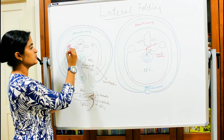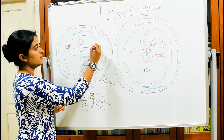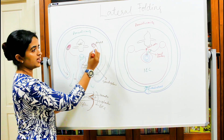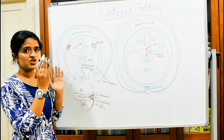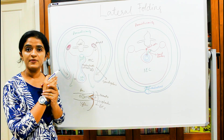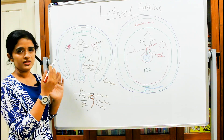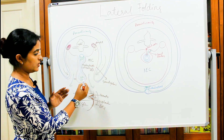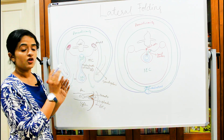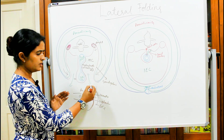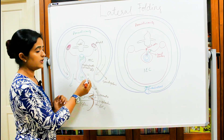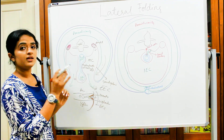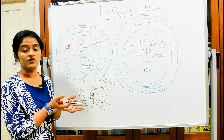We can see the intermediate mesoderm bulging into the cavity — that is how we get the development of the gonads and the urogenital system. The entire genital system develops from the intermediate mesoderm, which is a derivative of the intra-embryonic mesoderm. In this figure we can also see the splanchnopleuric lining and the somatopleuric layer of the intra-embryonic mesoderm, with a communication on either side connecting to the extra-embryonic coelom.